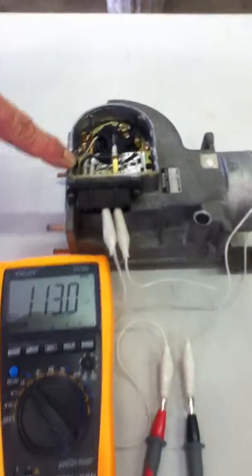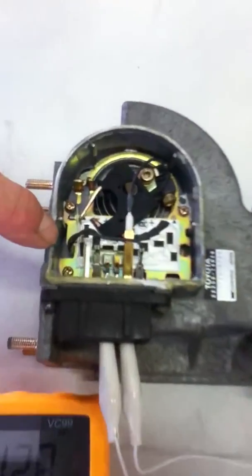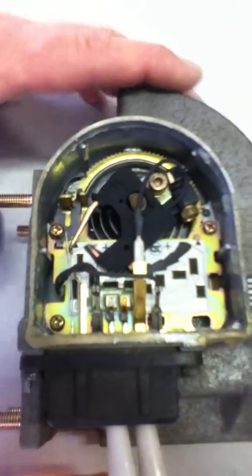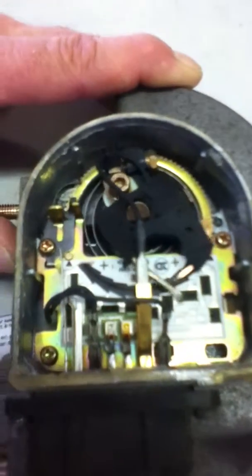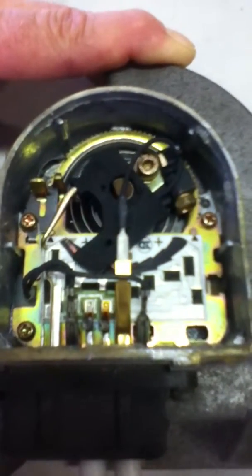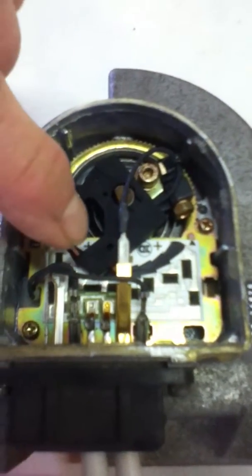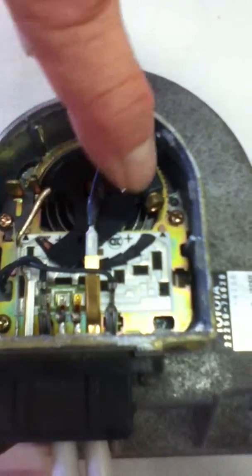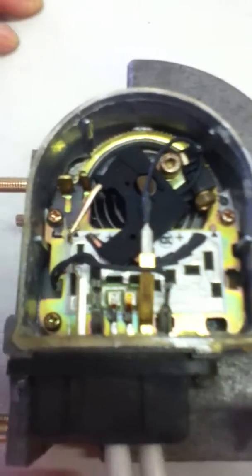We have a vane airflow sensor here which we think is bad. Now notice what happens here as the door opens and closes. There's a contact on the inside here that runs across the potentiometer grid and those contacts frequently go bad.